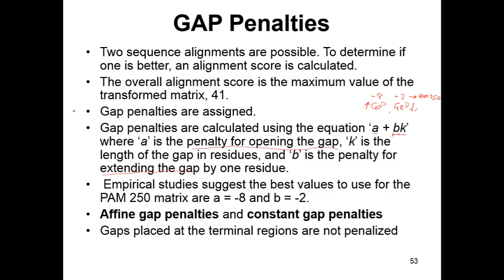The next type of penalizing scheme is constant gap penalties. In constant gap penalties, the values of gap opening penalty and gap extension penalty are kept the same. This scheme appears to be less realistic compared to affine gap penalty. Hence, the affine gap penalty scheme is generally implemented in real-life alignment problems.